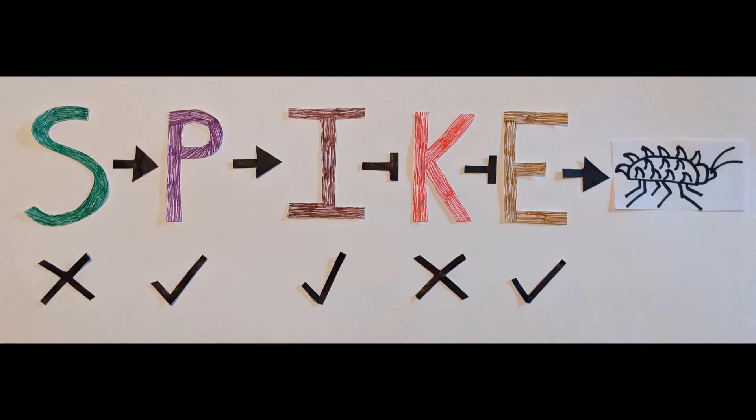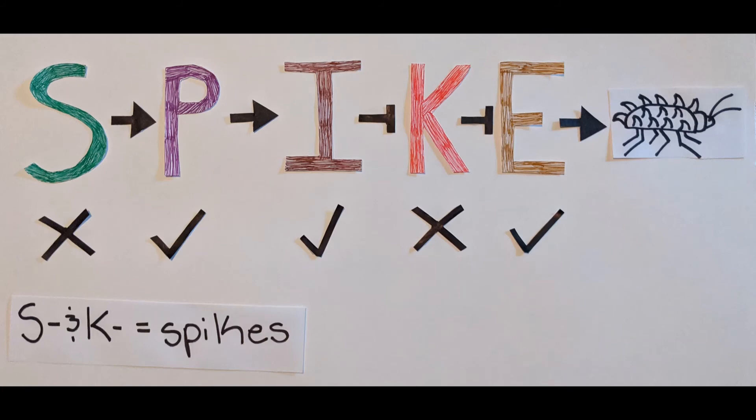For the fourth mutation, the S and K genes are removed. With the S gene gone, P cannot be activated, which means I can also not be activated. But with the K gene removed and inhibited, the E gene can produce spikes. So when the S and K genes are removed, the cells do produce spikes.